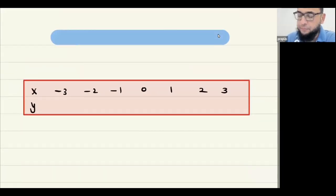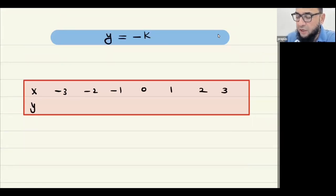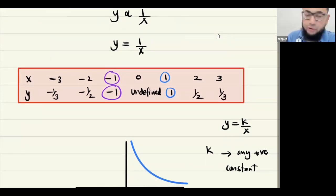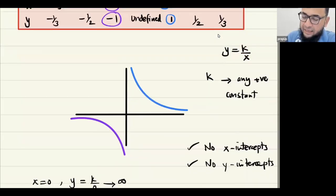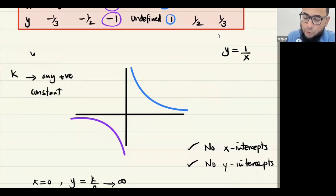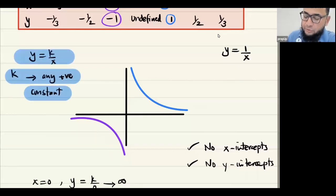Now again it's a simple reciprocal function, but this time we are looking at y equals negative k over x, where k is a positive constant. The previous graph was essentially y equals one over x, using k equals 1. In general, y equals k over x gives that graph. Now we want y equals negative k over x.